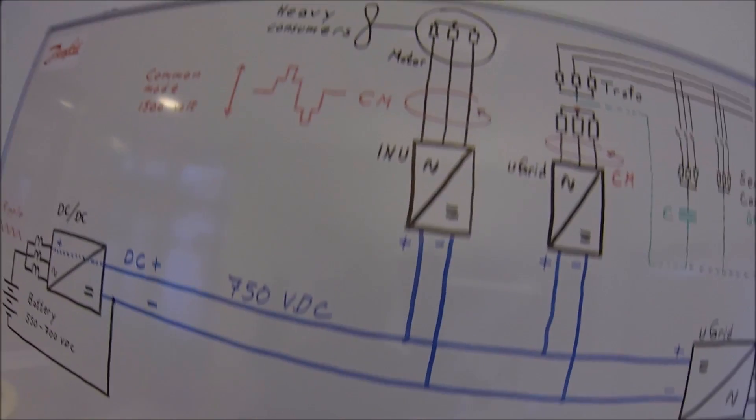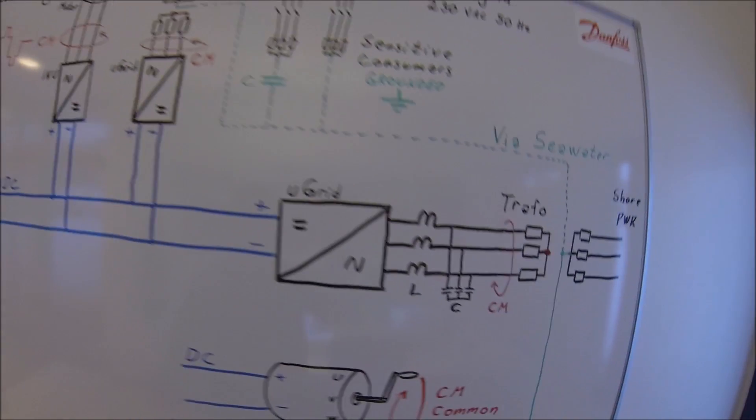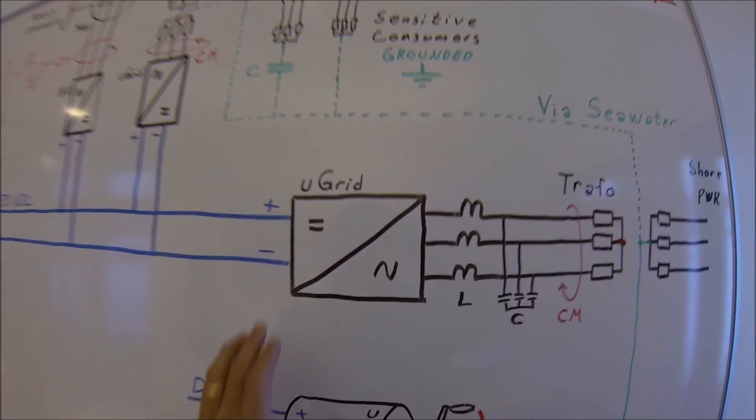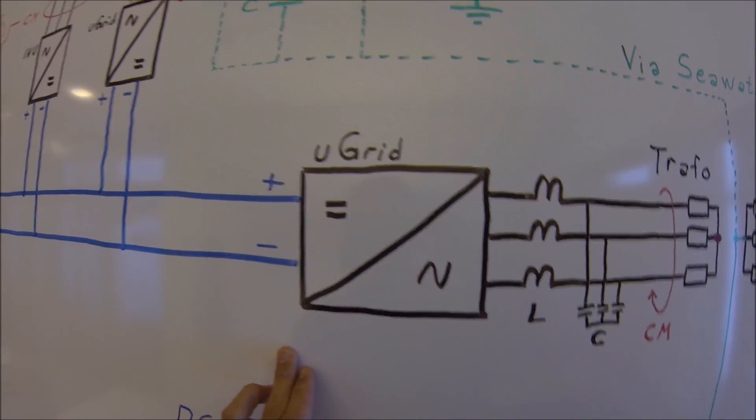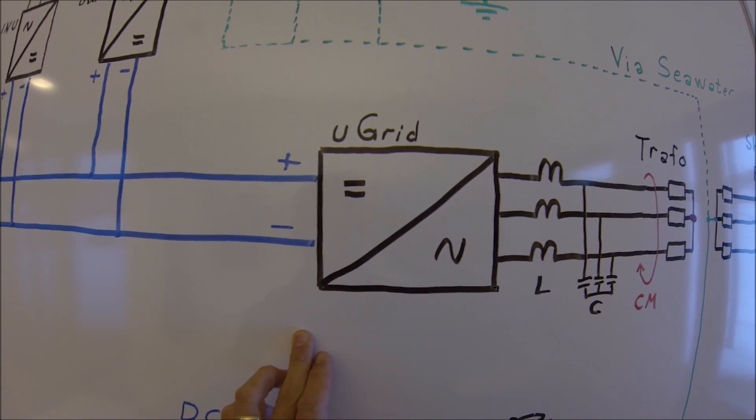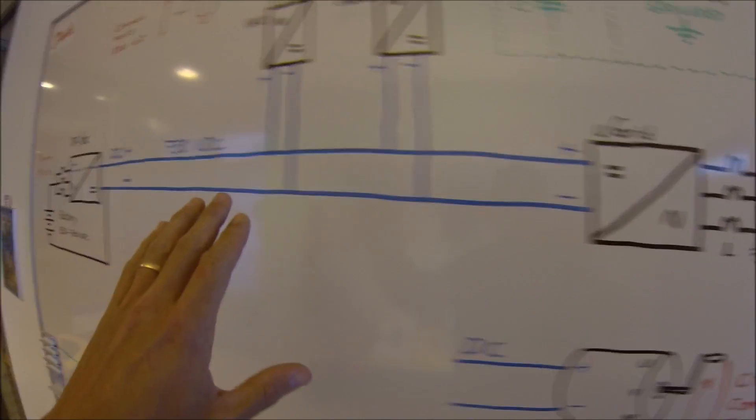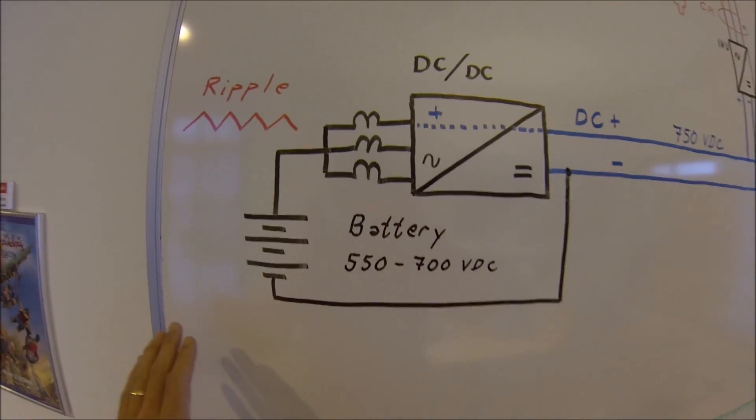However, there are many other consumers on board in a hybrid ship that can make common mode, especially the charger. There is a big frequency converter that usually is connected to shore that is supposed to be able to charge the big batteries.